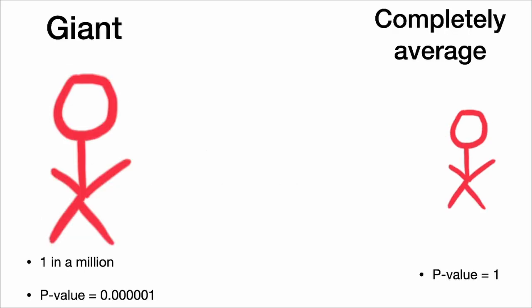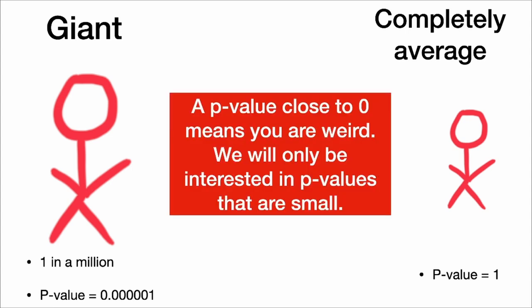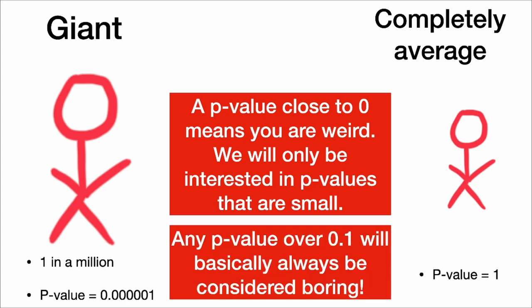So the giant, who is one in a million, has a very small p-value, and the average person has a p-value of one. A p-value close to zero means you are weird. We will only be interested in p-values that are small — any p-value over .1 will basically always be considered boring.